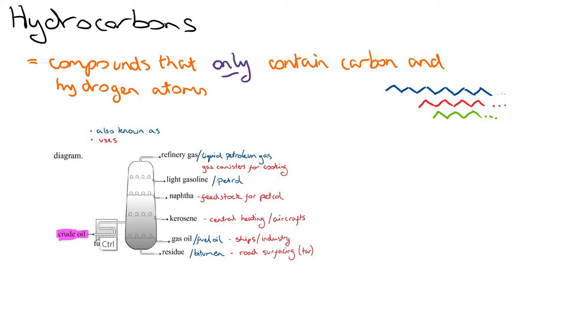The crude oil goes into a furnace where it's heated to a very high temperature. So as it's heated, the vapors then enter into the fractioning column. The fractioning column is hot at the bottom and cold at the top.